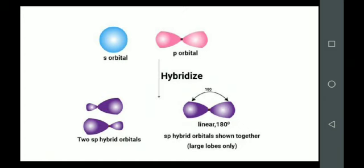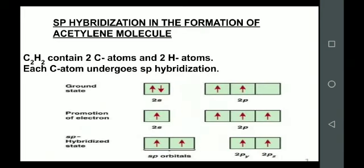Now let us understand sp hybridization by taking the example of the acetylene molecule. The formula of acetylene is C₂H₂, where CH is triply bonded to another CH. The carbon atoms are bonded by a triple bond with each other.